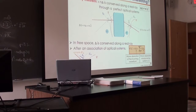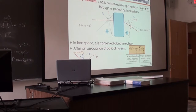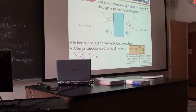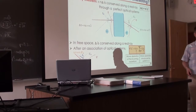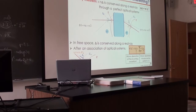In free space, delta is conserved. So if you have an association of systems and your systems introduce aberrations, then this Gouy theory allows you to sum the n'_i · delta_i to obtain the wave aberration at the output of your entire system. Namely, n'·delta' total is equal to the incoming wave aberration plus the sum of all the wave aberration contributions brought by each single system.